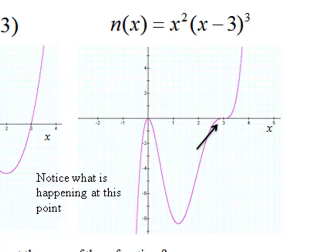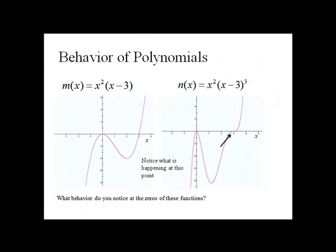Notice with n of x, at three, where we have an odd multiplicity, it's actually repeated three times, it does go through, but it actually flattens out. Note, this is what we'll expect to see when we have an odd multiplicity.